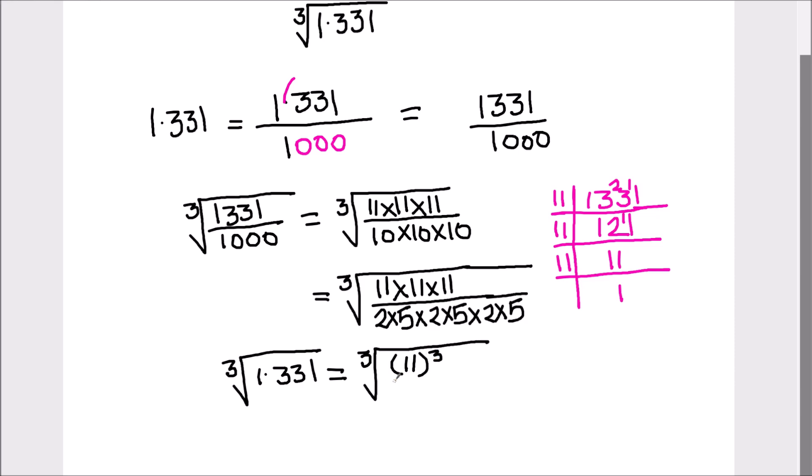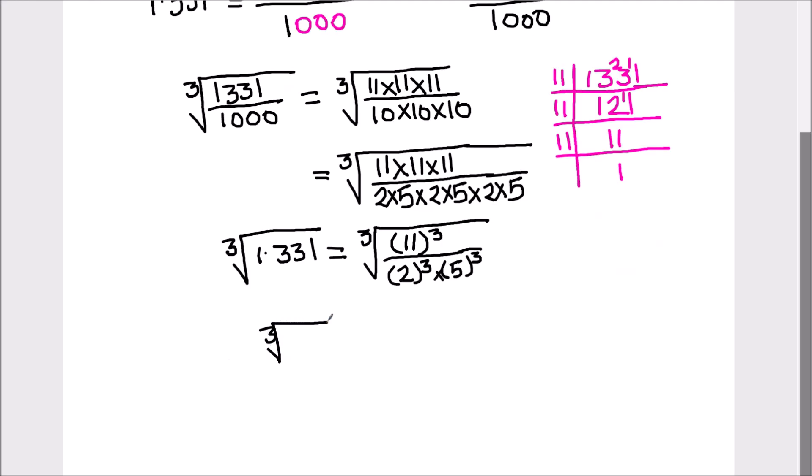So the cube root of 1.331 equals cube root of 11 times 11 times 11, can be written as 11 cubed divided by 2 cubed times 5 cubed. Or cube root of 1.331 equals, as this is a cube root and these are cube numbers, this cube gets cancelled with the cube root sign and we are left with 11 upon 2 times 5.